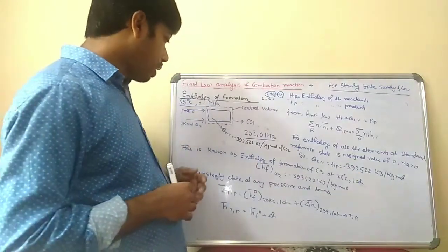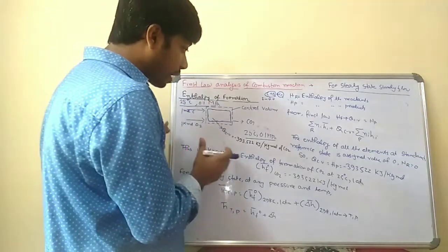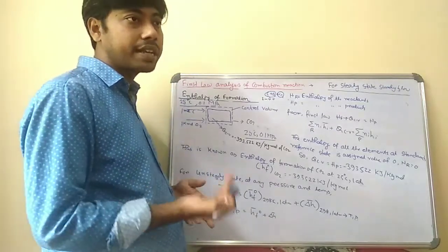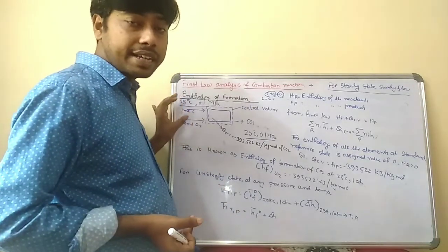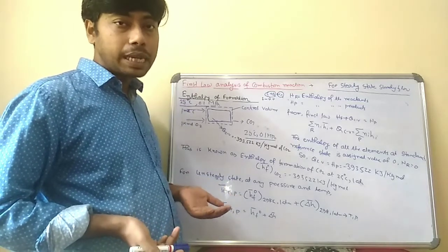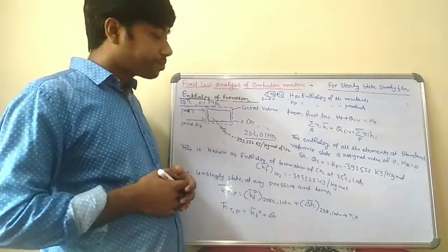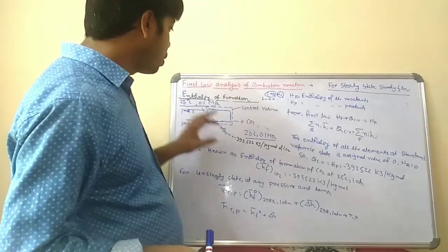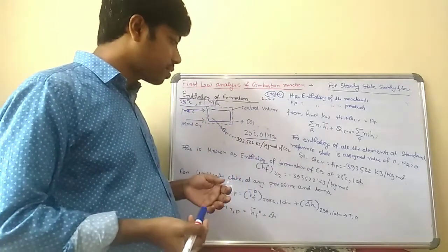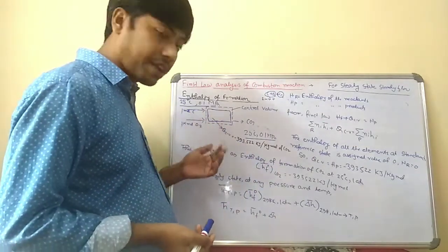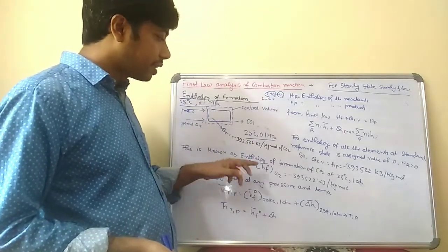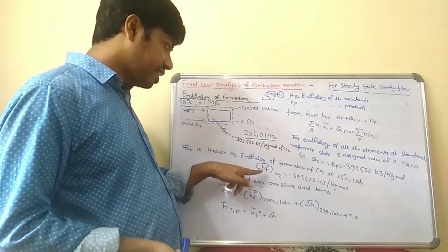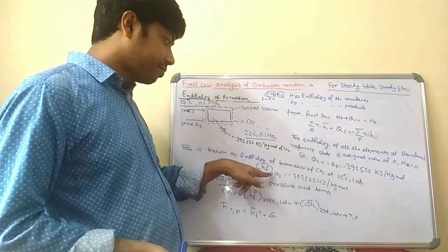This value is known as the enthalpy of formation of carbon dioxide. Similarly, it can be written for different reactants — for example, if methane and oxygen react as reactants and the products are CO2 and H2O, the enthalpy of formation for carbon dioxide remains the same at standard state. This is the enthalpy of formation during the reaction at standard reference state of 25°C and 1 atmosphere, designated as hf⁰(CO2).